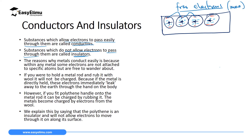Electrons very close to the nucleus are strongly attracted to it because unlike charges attract. However, electrons very far away from the nucleus are loosely attracted, because as you move away from the nucleus the force of attraction decreases. Therefore, electrons far from the nucleus are free to move on the conductor's surface — these are called free electrons. Most metals conduct electricity because they have these free electrons which can wander and move freely on the surface of the conductor.